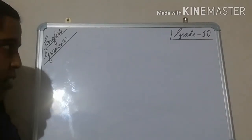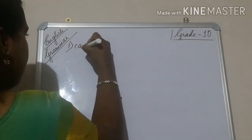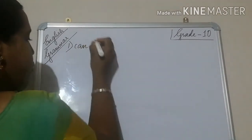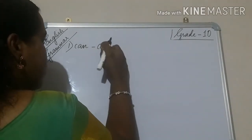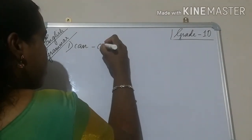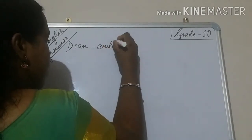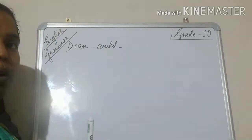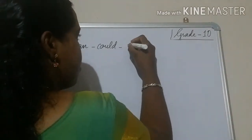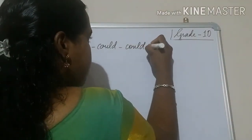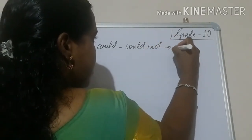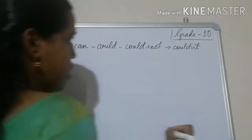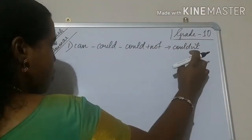The first one we can see — I will start with the ability word. Can. Can is used to express ability. And the past form of can is could. And the negative form — you will be using could plus not, and it becomes couldn't. Couldn't. The short form of could not is couldn't.